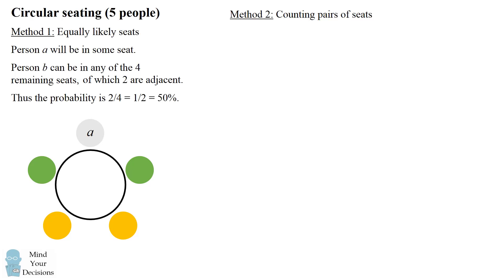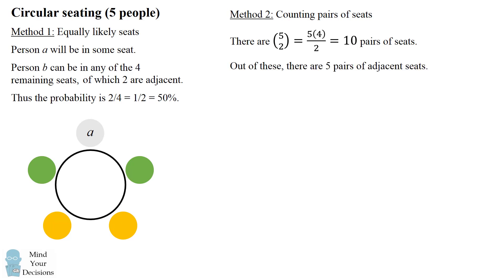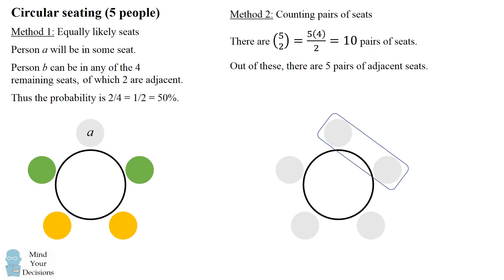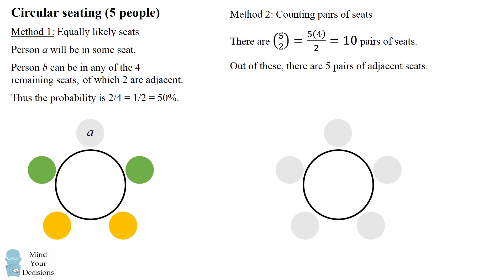There's another way to solve the problem by counting pairs of seats. When there are five seats, there are five choose two, which equals ten pairs of seats. Out of these, there are five pairs that are adjacent. Each seat can be paired adjacently to the one right next to it going clockwise. Therefore, the probability that A and B will be adjacent is five divided by ten, which also equals one half — that's also fifty percent.